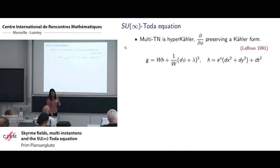LeBrun says that to get a scalar flat Kähler metric with a Killing symmetry preserving a Kähler form can be written in a particular form and is determined by the SU infinity Toda equation. Our multi-Taub-NUT metric is hyperkähler, then it can be shown that this axial symmetry preserves a Kähler form. Hence it can be written in this form of the LeBrun ansatz here.